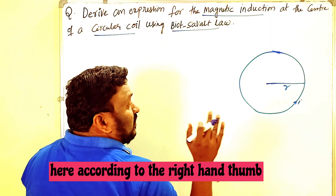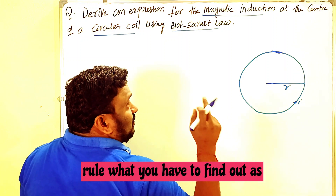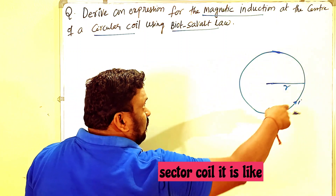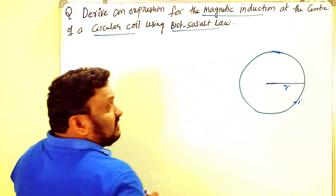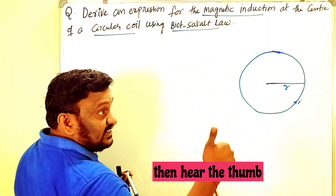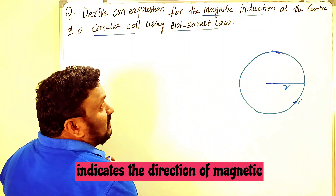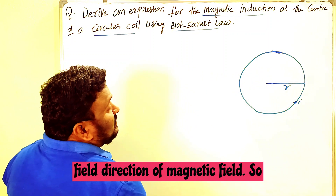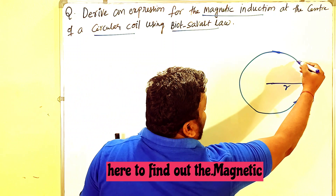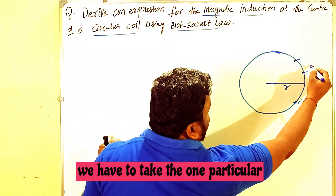According to the right-hand thumb rule, when current flows in a circular coil in the direction of the folded fingers, the thumb indicates the direction of the magnetic field. So, to find the magnetic induction at the center of the circular coil, we take one particular element of length dl.